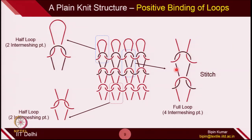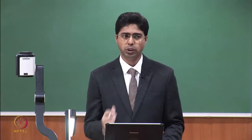This full loop, in reality, we call a stitch loop or a stitch, because this is the perfectly stable loop — you have two intermeshing points on the top and two intermeshing points at the bottom simultaneously. So this loop can never be opened either from the bottom or the top side. Inside a fabric structure, there are only two possibilities for a loop to interact with its previous loop.